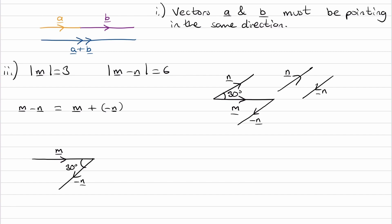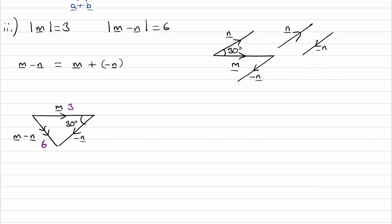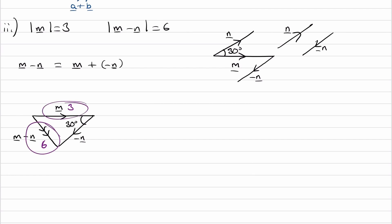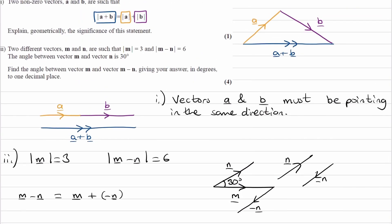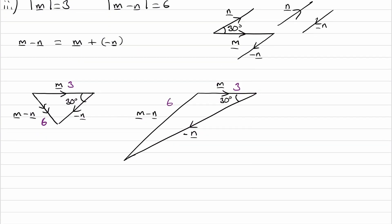In terms of magnitude, the length of the top side — vector m — is 3. The vector m minus n goes from start to finish, and we're told its magnitude is 6, so this length is 6. From the rough sketch the triangle is not to scale, so let's redraw it more accurately: minus n with the 30-degree angle, and m minus n as the third side. The magnitude of the top side is 3, the magnitude of m minus n is 6. We're trying to work out the angle theta between vector m and vector m minus n.